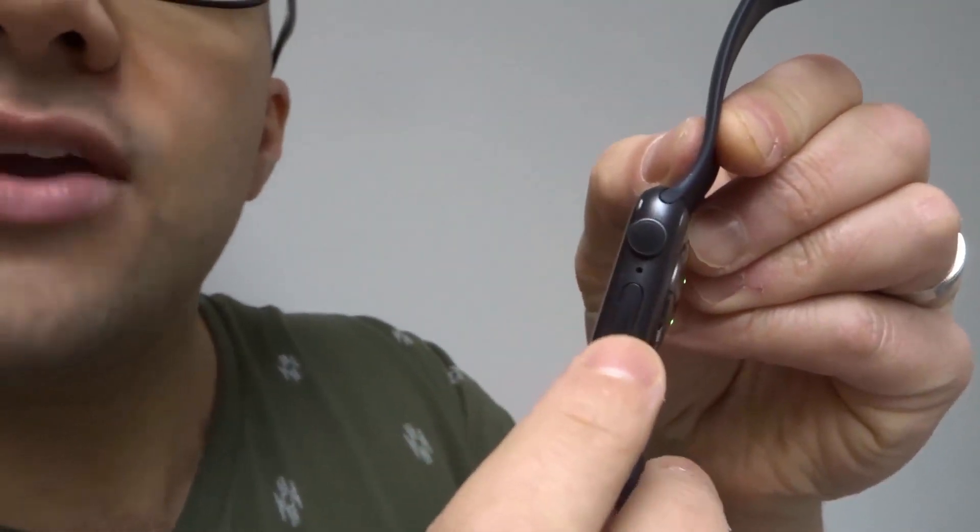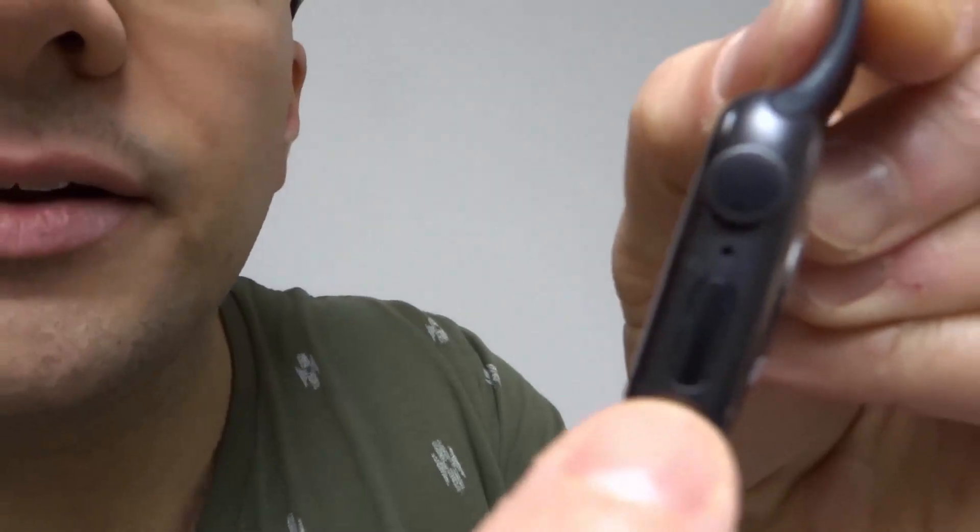Last but not least is number six, which is turn off and on the Apple Watch. So to turn off the Apple Watch is very simple and easy. If you look on the side of the watch, you have the crown and you have the longer button right over there. Not many people know about this button right here. But what you want to do is press and hold down on that button.